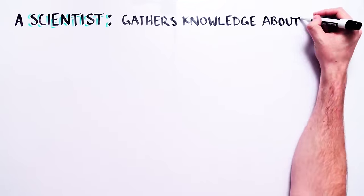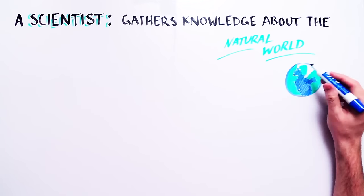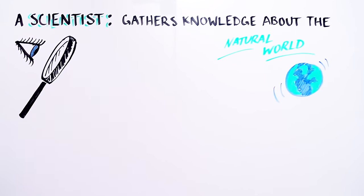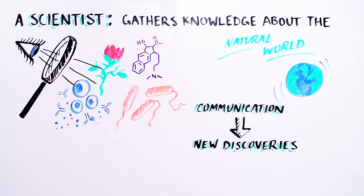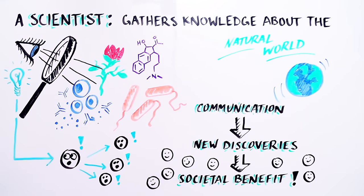A scientist's job is to obtain knowledge about the natural world. Sharing that knowledge is critical for scientific progress, as new information produced by one scientist can be used by others to make new discoveries and further benefit society.